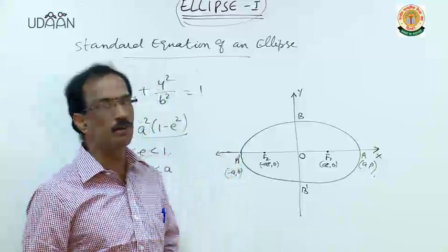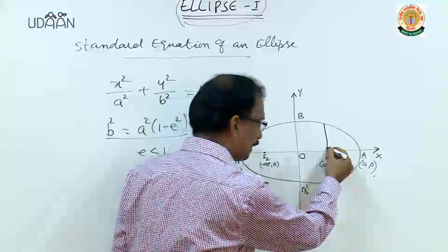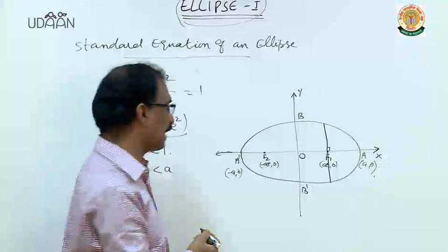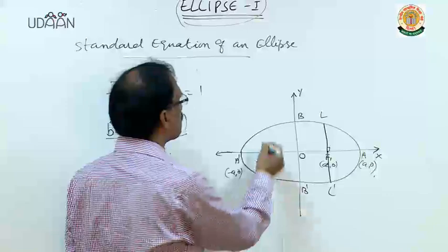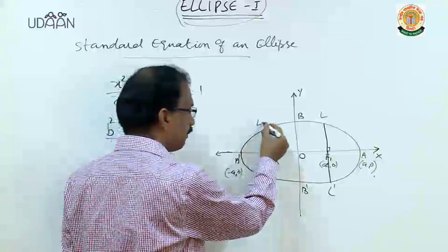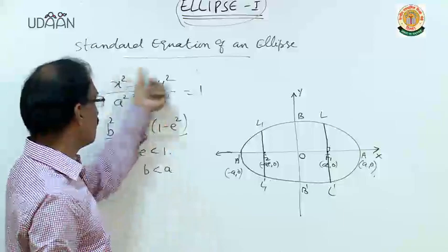F1 and F2 are the foci. If you have a line through a focus perpendicular to the focal axis, that is called the latus rectum, named LL'. There are two latus recta, L1L1' and L2L2'.